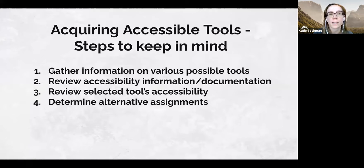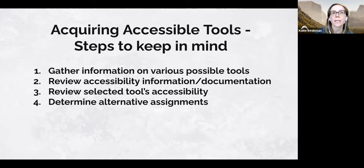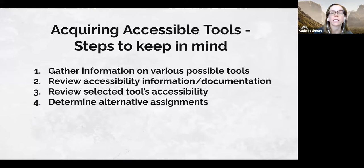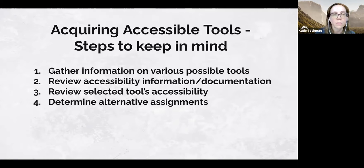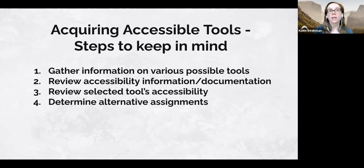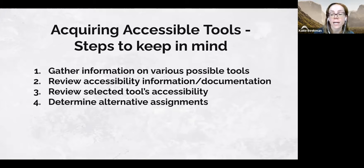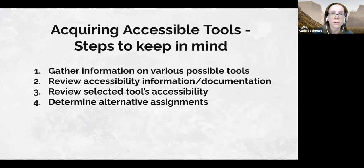All campuses should have some process in place for reviewing technology tools before they're utilized. Step one: gather information on possible tools. Don't just go with the first product that looks great. When you have an idea of the kind of tool you want and the purpose it needs to serve, conduct market research on the various products that would fulfill this purpose.